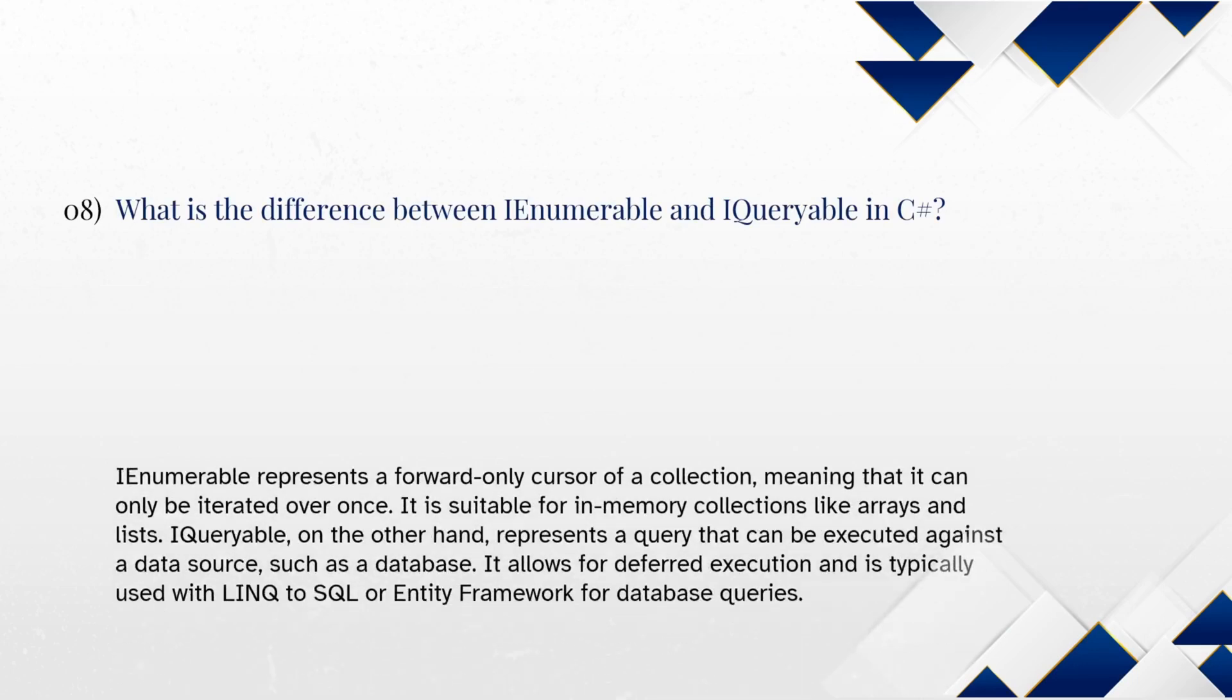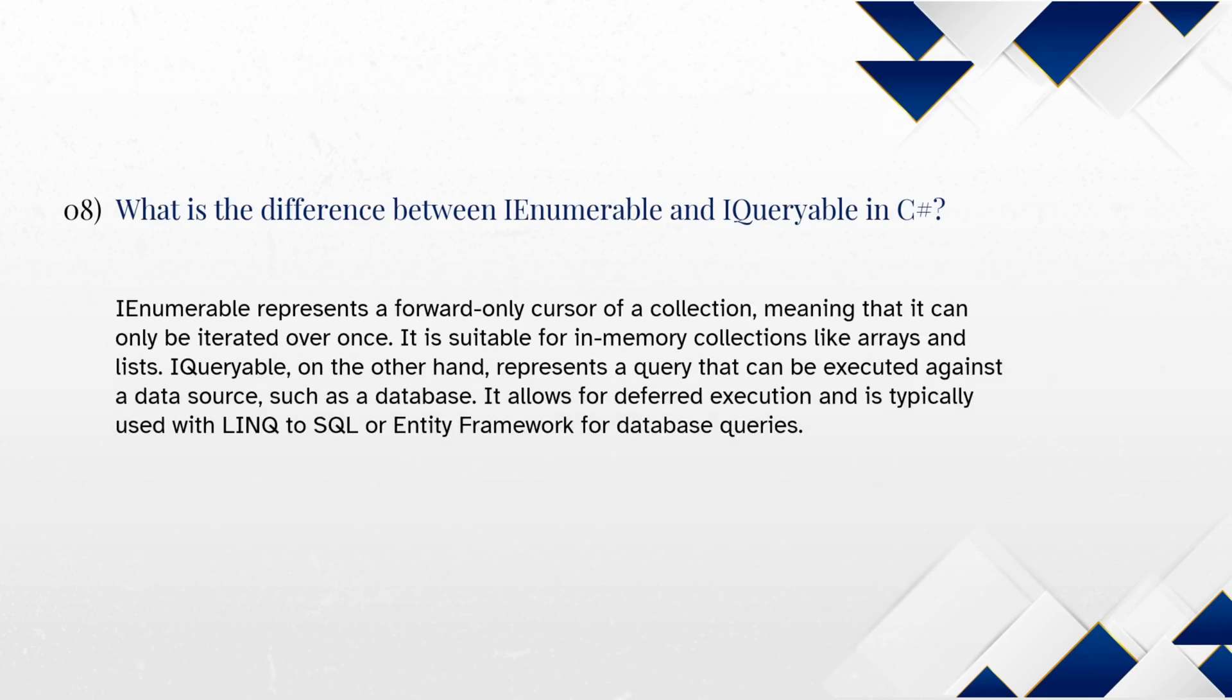What is the difference between IEnumerable and IQueryable in C-Sharp? IEnumerable represents a forward-only cursor of a collection, meaning that it can only be iterated over once. It is suitable for in-memory collections like arrays and lists. IQueryable, on the other hand, represents a query that can be executed against a data source, such as a database. It allows for deferred execution and is typically used with LINQ to SQL or Entity Framework for database queries.